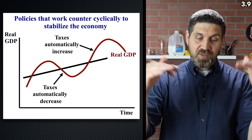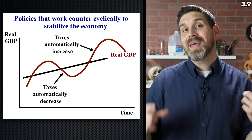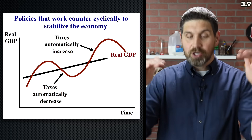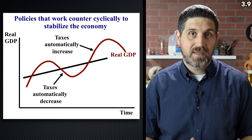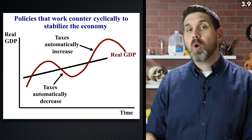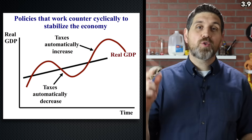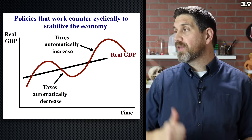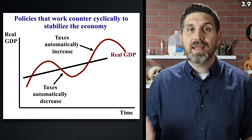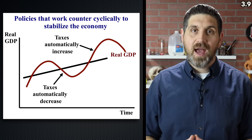When the economy starts to go down and there's a recession, people's incomes fall and they pay less taxes because they drop to lower tax brackets. Answer questions one through three on topic 3.9 in the study guide.